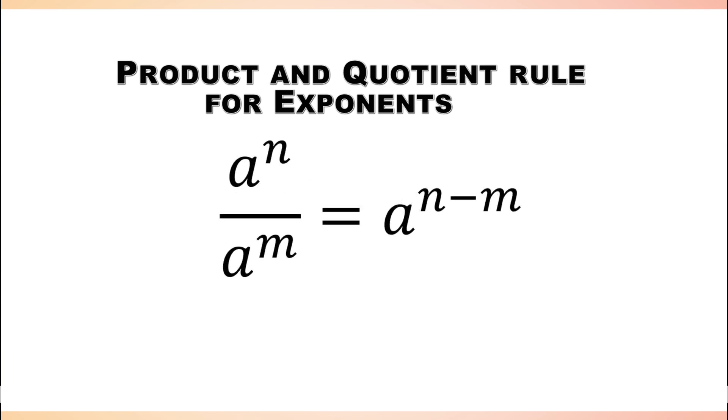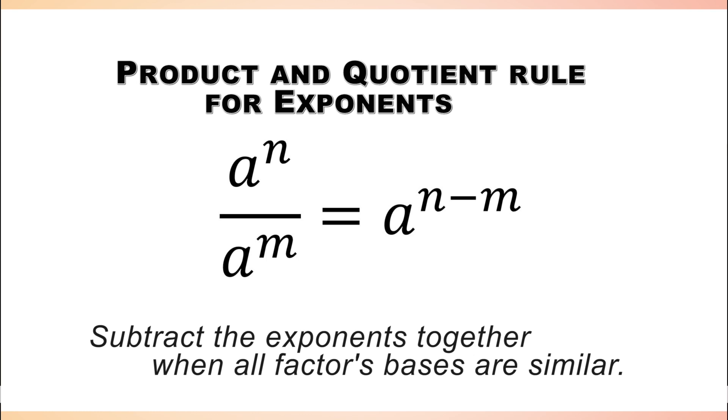The next property says that if we have base a with exponent n being divided by the same base with exponent m, we can combine them simply by subtracting the exponents.